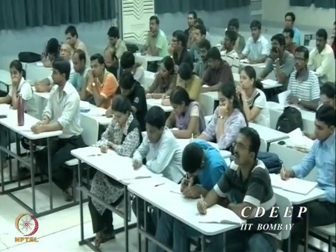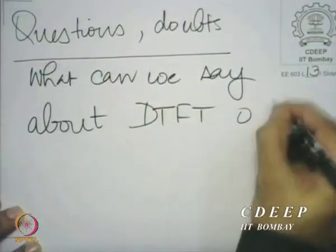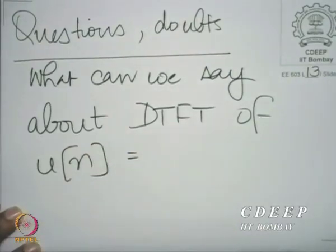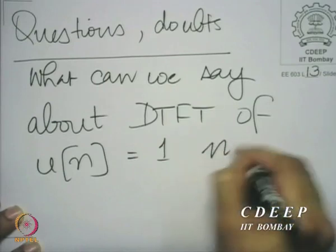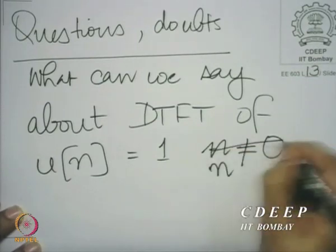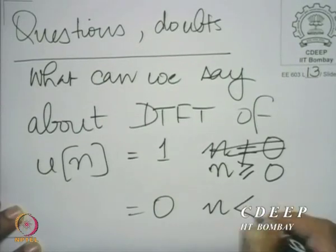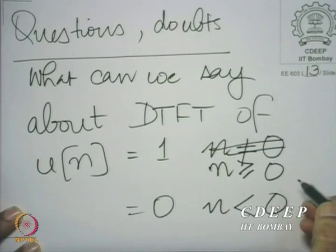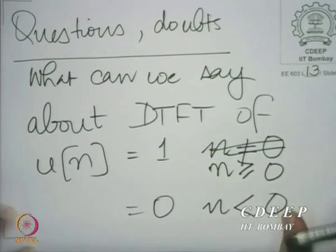So the question is: what can we say about the discrete time Fourier transform? What can we say about the DTFT of u[n]? The sequence u[n] is very important in discrete time signal processing. It is a sequence which is 1 for n greater than or equal to 0, and 0 for n less than 0.